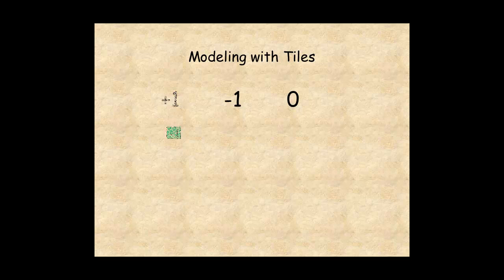A green tile represents one positive unit. A red tile represents one negative unit. A green and red tile together represents zero.